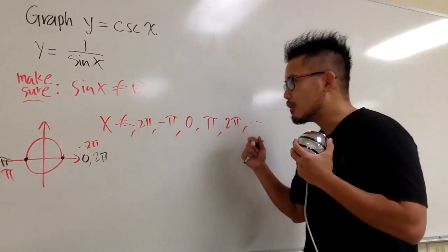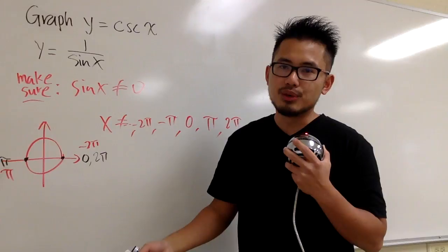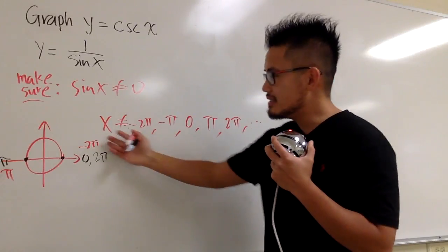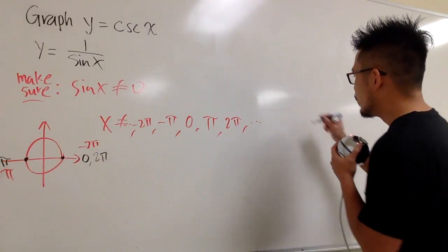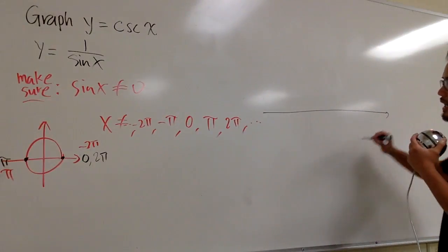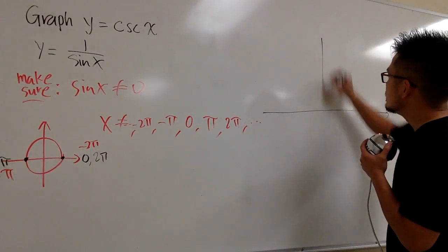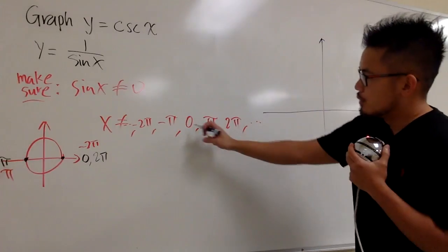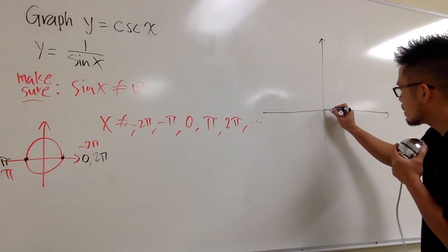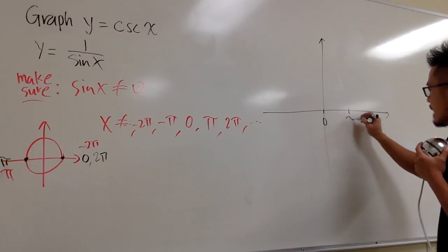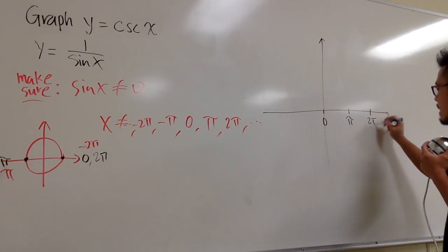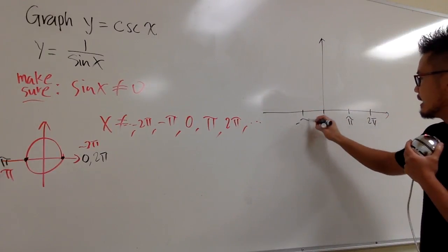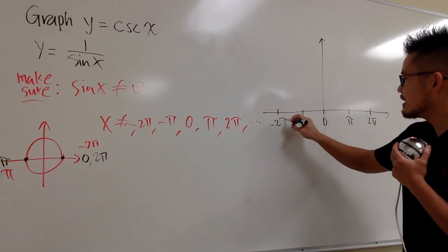These are the numbers that will make sine x to be 0. And for the graph, these are the vertical asymptotes. So we are ready to put down these numbers on the graph, and we have vertical asymptotes there. We have 0, and then let me just indicate this is my pi, and this is my 2pi, and here is my negative pi, and here is my negative 2pi.